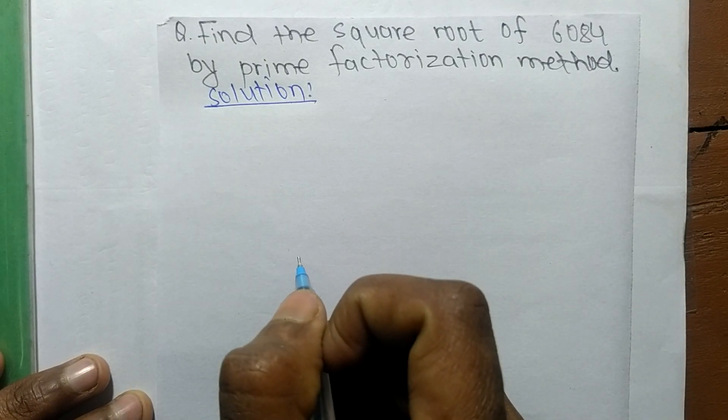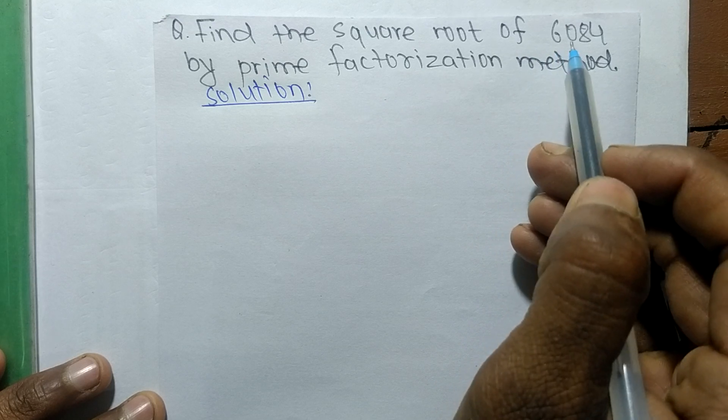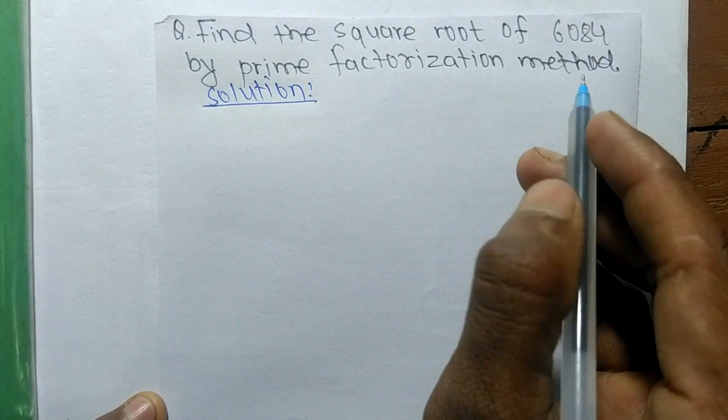Today in this video, we shall learn to find the square root of 6084 by prime factorization method.